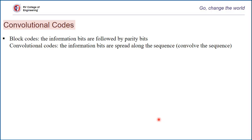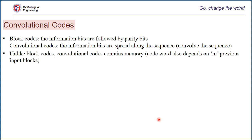Welcome to another video lecture on convolution codes. In earlier video lectures, we saw how channel coding helps us in reducing probability of error. There are two ways of reducing probability of error: block codes and convolution codes. In your earlier course, you studied block codes and their decoding techniques. In this Communication System 2 course, you will be introduced to convolution codes. This video is the first among a series explaining convolution codes.